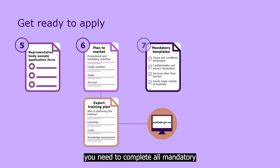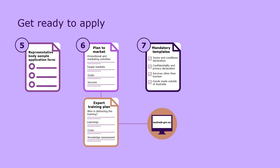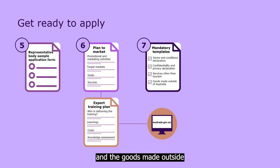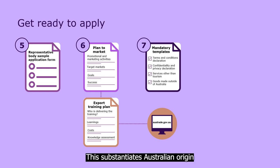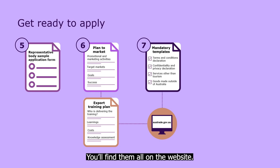For step seven, you need to complete all mandatory templates and reading. These are the Terms and Conditions Declaration, the Confidentiality and Privacy Declaration, the Services Other Than Tourism Attachment — only if you're promoting eligible services on behalf of your SME members — and the goods made outside of Australia attachment. This substantiates Australian origin if you are promoting eligible products on behalf of your SME members and the products are made outside Australia. You'll find them all on the website.